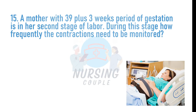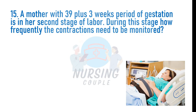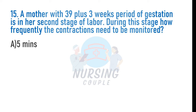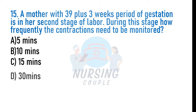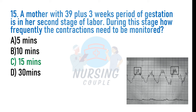A mother at 39 plus 3 weeks gestation is in her second stage of labor. During this stage, how frequently do contractions need to be monitored? A. 5 minutes, B. 10 minutes, C. 15 minutes, D. 30 minutes. The answer is Option C: 15 minutes. For low-risk pregnancies with normal labor, contractions should be monitored every 30 minutes during the first stage of labor and every 15 minutes during the second stage of labor.